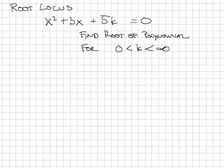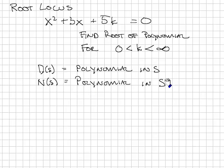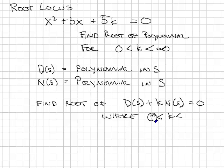Our technique will be to divide the polynomial into two pieces. One piece, which I'm going to refer to as D(s), is a polynomial in s, and the other is N(s), which is another polynomial in s. And then I'm interested in what are the roots of the new polynomial D(s) plus k N(s) equals 0, where k varies between 0 and infinity.